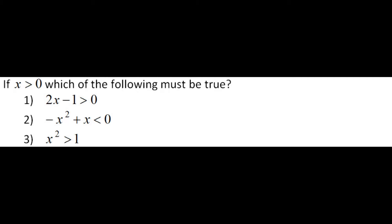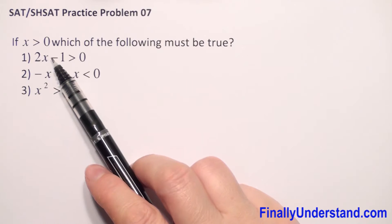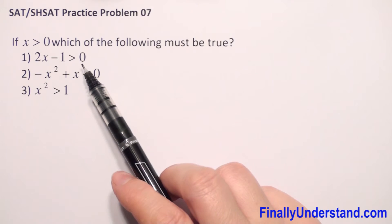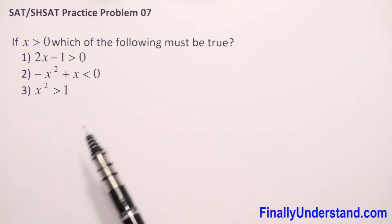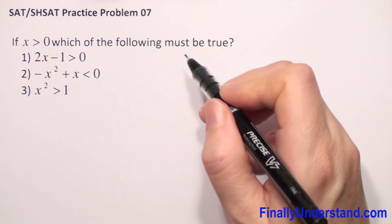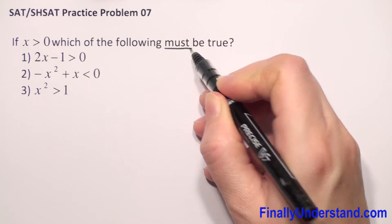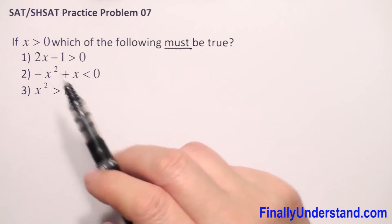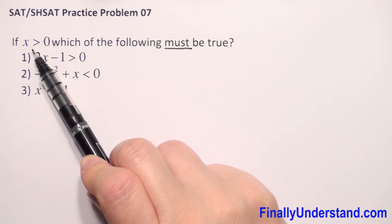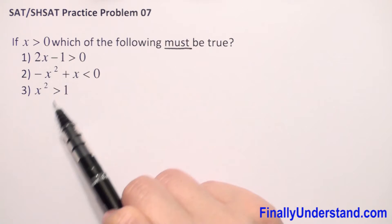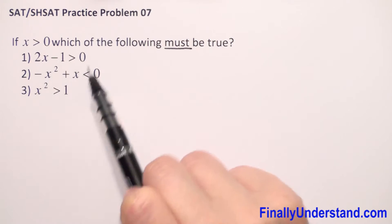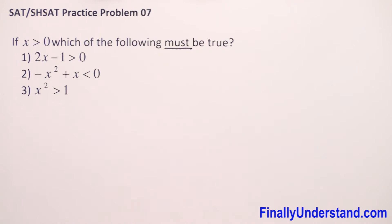We have that x is greater than 0, and we have to check which of the following inequalities must be true. 'Must be true' means for every number greater than 0, these inequalities are true.